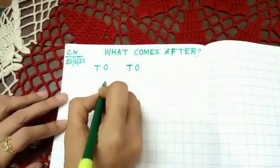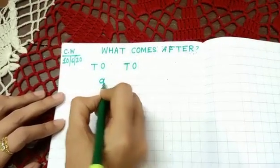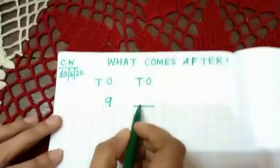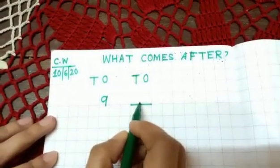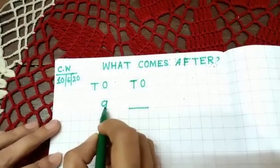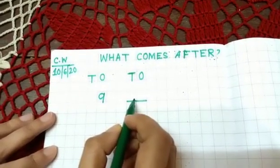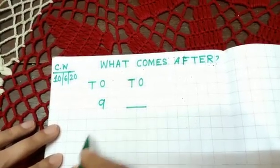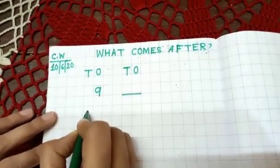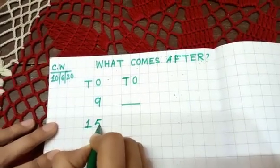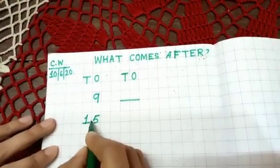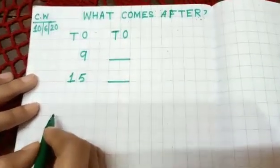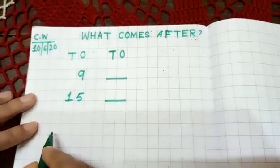First number is nine. First number is nine and give here dash. So nine, next number is what. You will write by yourself. Nine next number is what. You will write. The next number is fifteen. Fifteen next number is what. You know fifteen next number is, yes, very good.